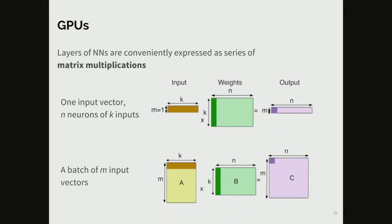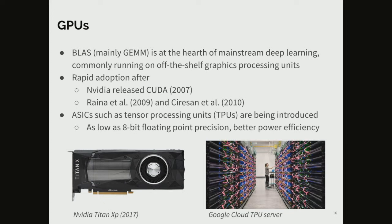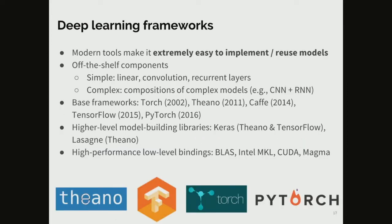Another thing that enabled the deep learning revolution is hardware advances on graphics processing units. At the end of the day a neural network is just a series of matrix multiplications, and these are implemented very fast on GPUs. This started around 2007 and quickly became the standard — if you are doing deep learning you are running matrix multiplications on specialized hardware. People are also now designing hardware specifically for deep learning applications.